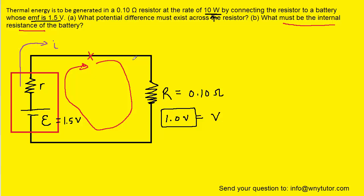As we move around the circuit, we encounter resistor R. We notice that we are moving in the same direction as the current marked with this purple arrow. Whenever we move in the same direction as the current, our potential change will be negative, and we can symbolize that by V — which we'll recall was 1.0 volts. As we continue, we encounter the battery, moving from the smaller negative plate to the larger positive plate, which gives a positive potential change equal to the EMF of the battery.